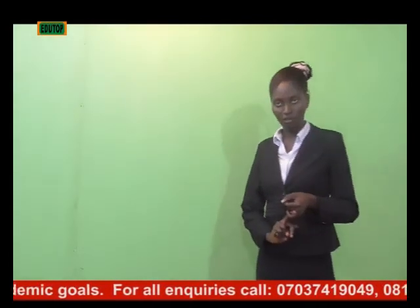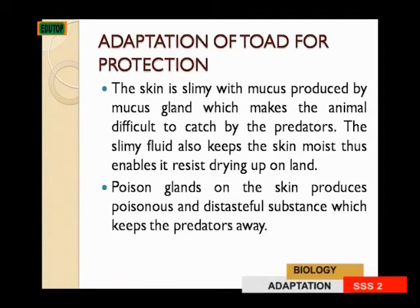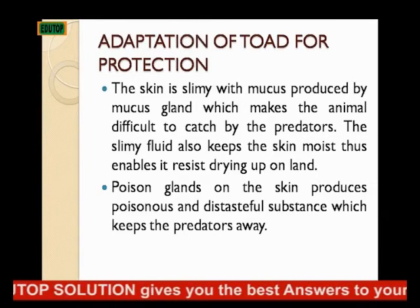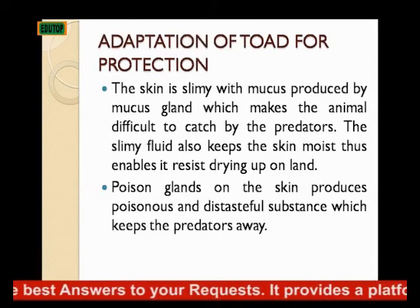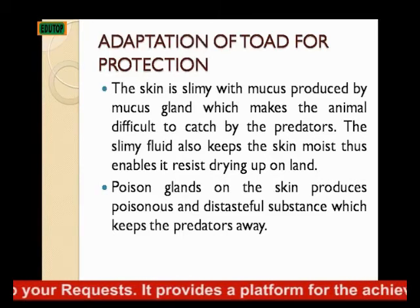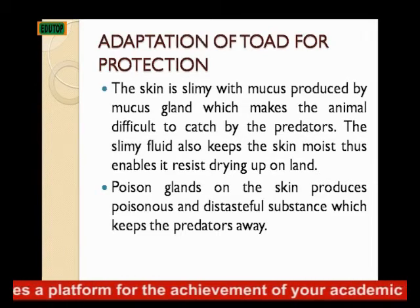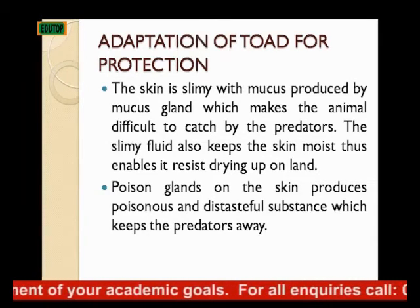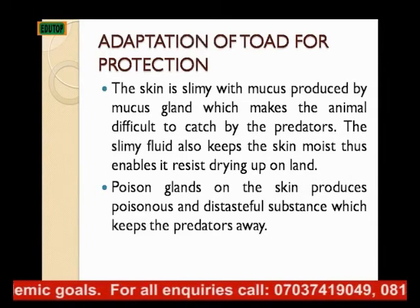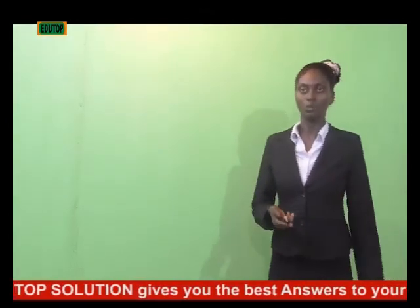The skin of the toad is slimy, with mucus produced by the mucus glands, which makes the animal difficult to catch by the predator — similar to the slimy body of the fish. The slimy fluid also keeps the skin moist, so the toad is able to resist drying out on land. The toad also has poison glands on its skin which produce poison and a distasteful taste that keeps the predator away. Once the predator tries to catch it and encounters that poison, it leaves the toad.